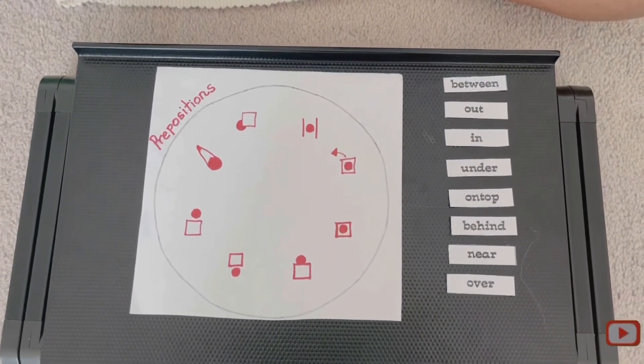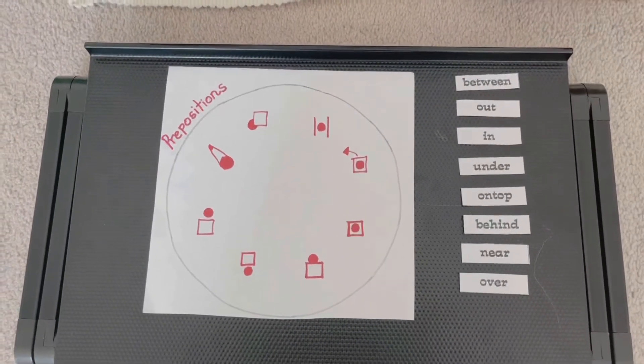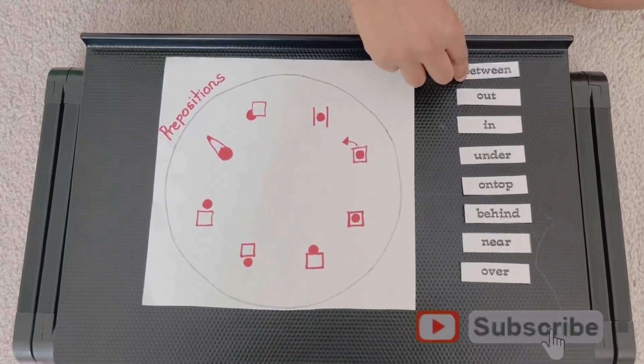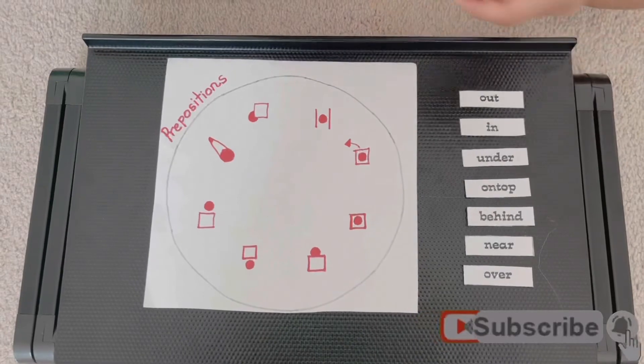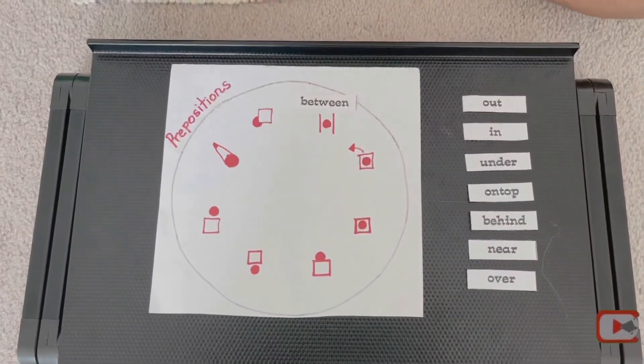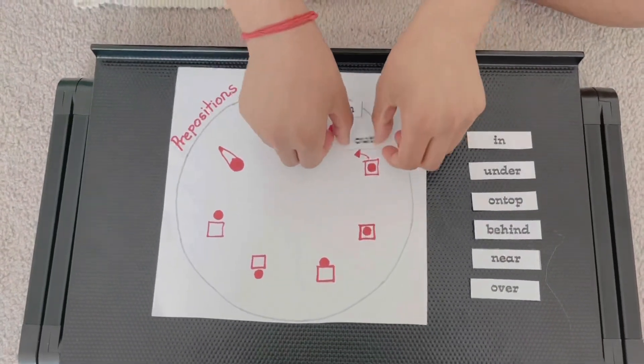So let's start by placing between. Between would be right here, and then out, that would be right there.